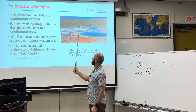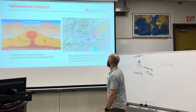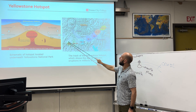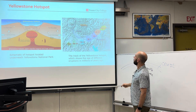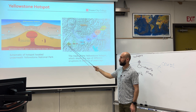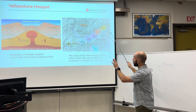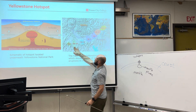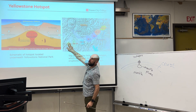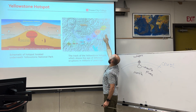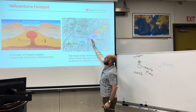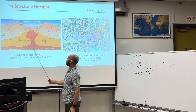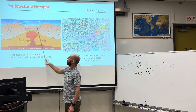The last time Yellowstone erupted was 631,000 years ago, but there are deposits of volcanic eruptions that trace back 16 million years. Again, we can trace the movement of the tectonic plate in this direction. Sixteen million years ago, these lava deposits sat directly above the hotspot, but then the hotspot continued to move — the mantle plume, the volcano.